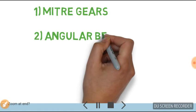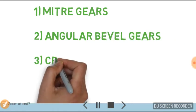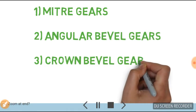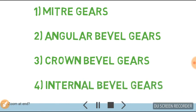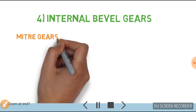They are: mitre gears, angular bevel gears, crown bevel gears, and last one is internal bevel gear.